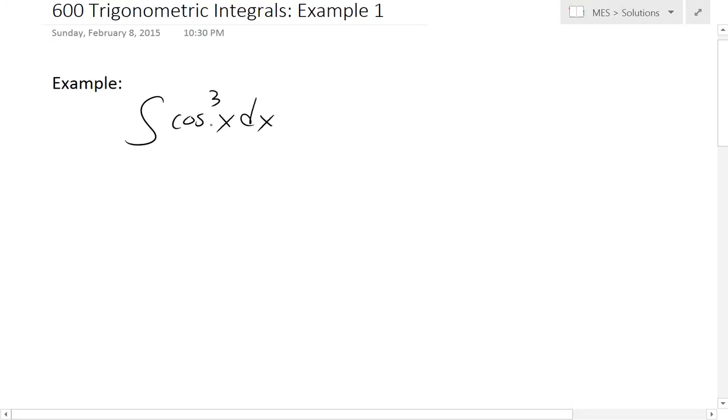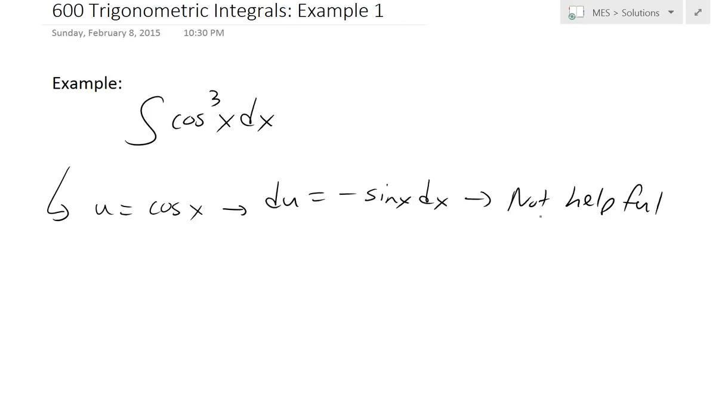Now, the integral of this is not straightforward, but it looks like we could possibly use substitution rules. So for example, if we were to let u equals cosine of x, when we get the differential du, this equals negative sine of x dx, and there's nowhere to really plug this inside, so this is not helpful. The reason is we don't have an extra sine factor in this integral.